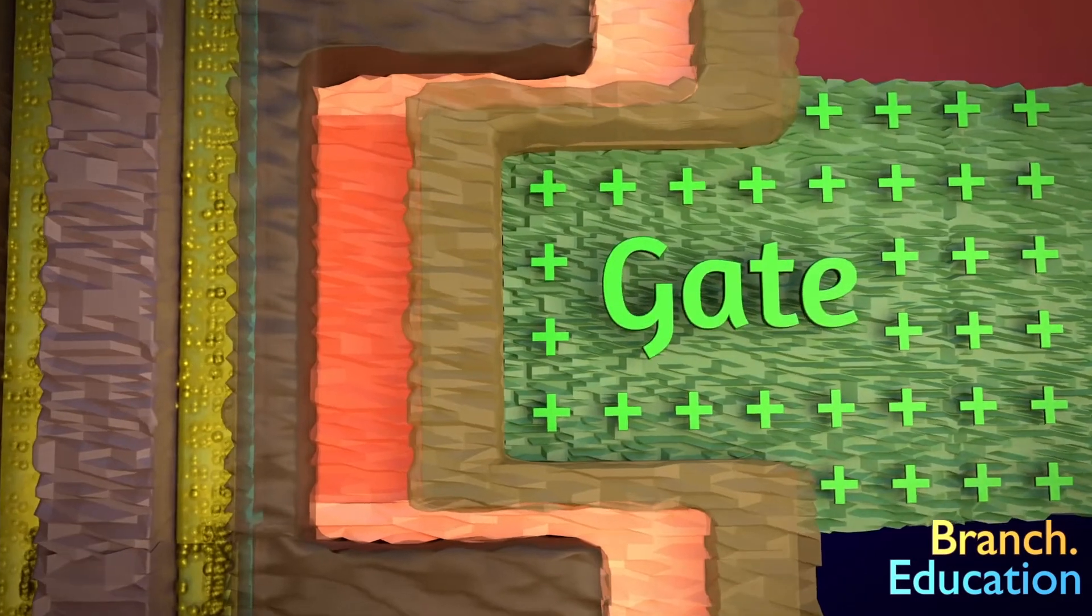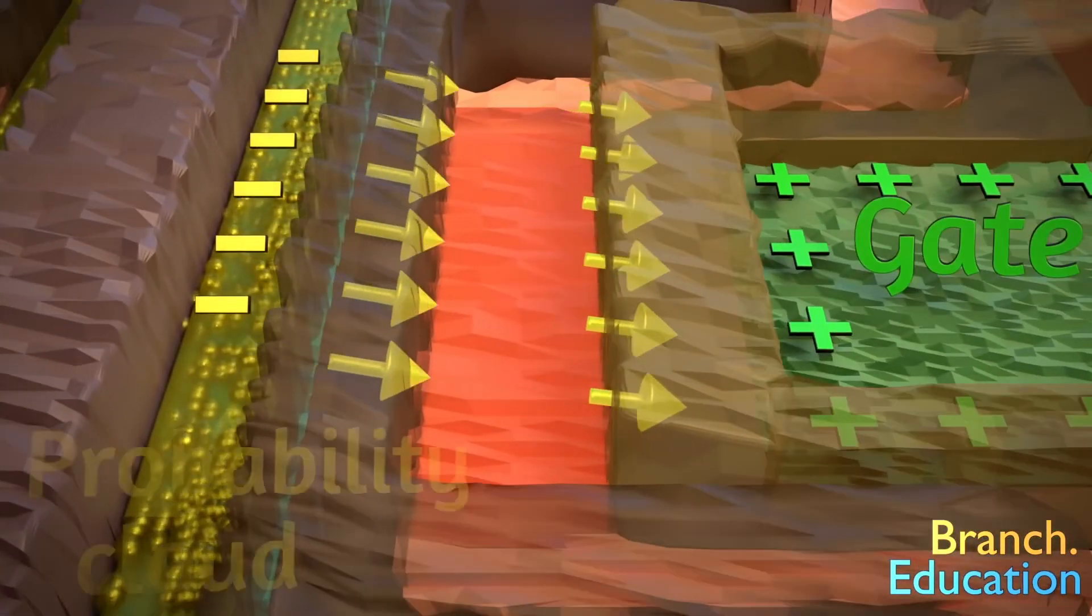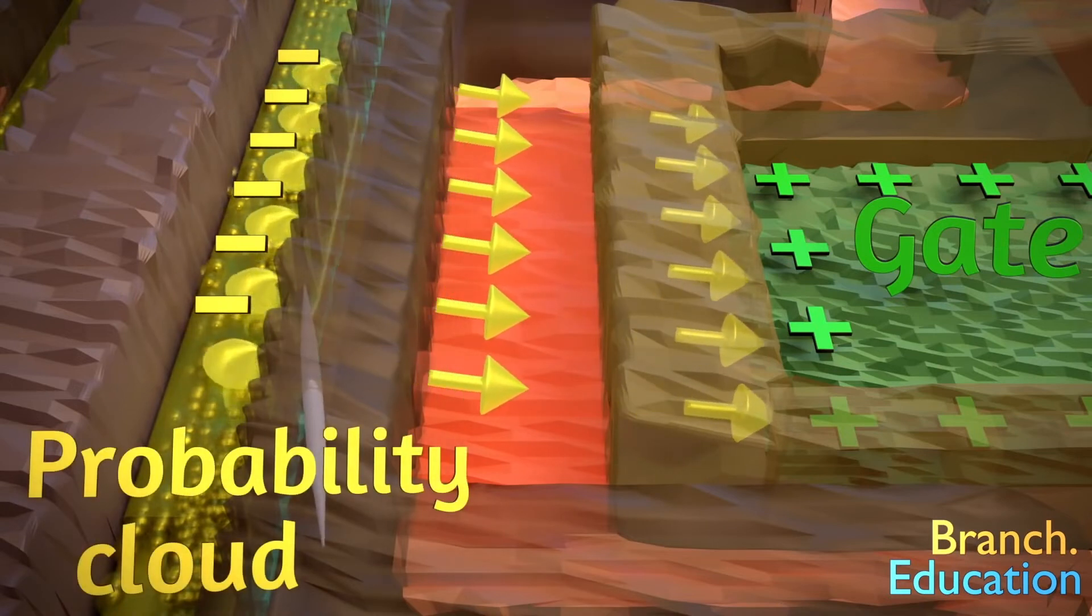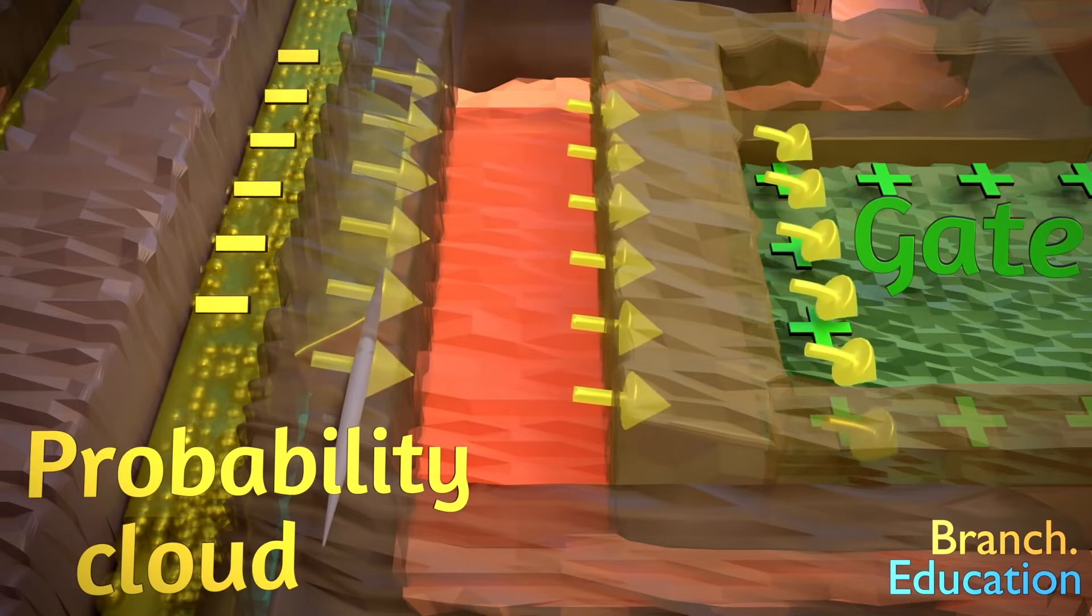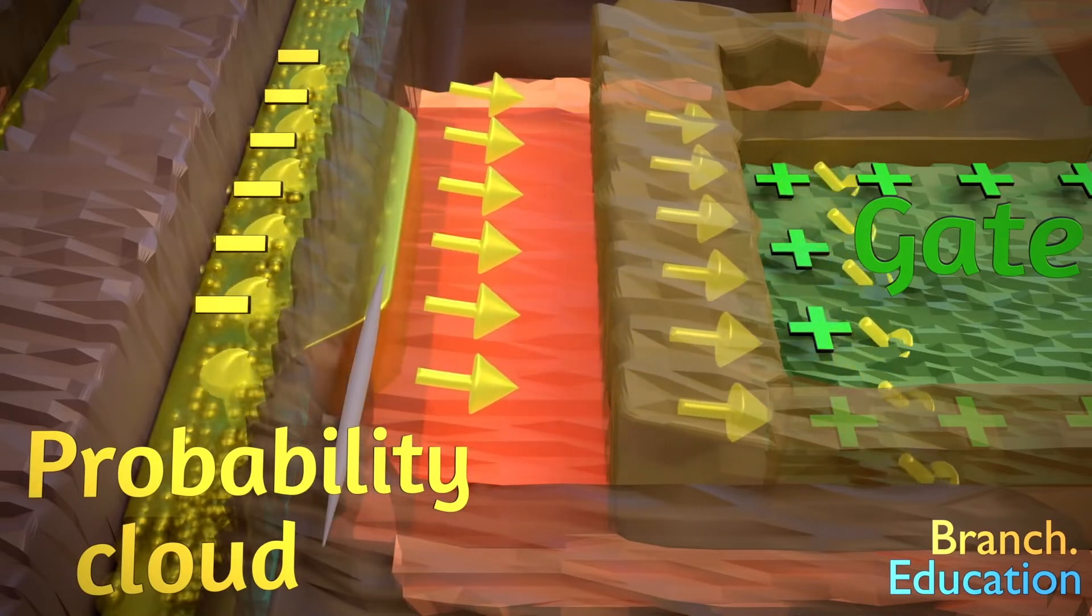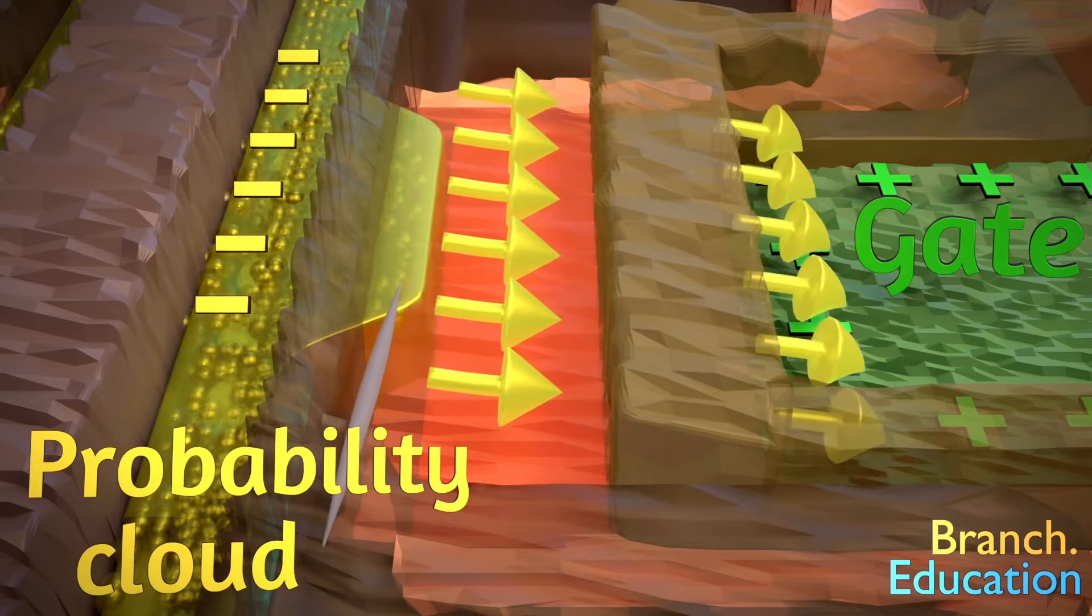When we apply a positive charge to the green gate on the right, that positive charge attracts the negatively charged probability cloud of the electrons in the channel and pulls that probability cloud towards the orange charge trap.